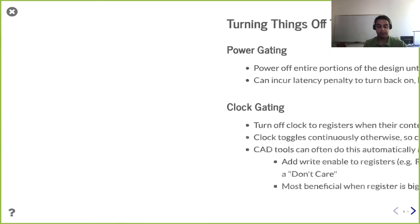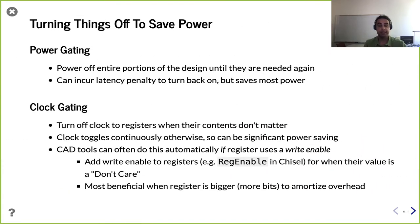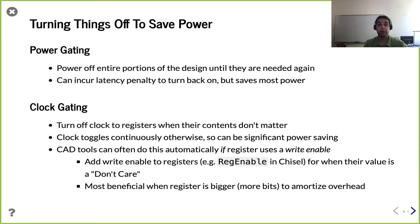To reduce the activity factor, you want to turn things off. There are two forms: power gating and clock gating. Power gating is really turning off the breaker — cutting the power off altogether for an entire portion of the design. You would save a lot of power that way; it's almost like reducing the capacitance term in the equation by literally taking that portion out of the equation.